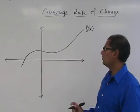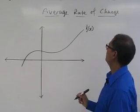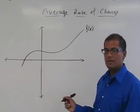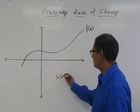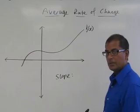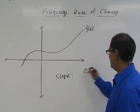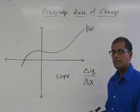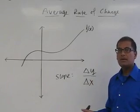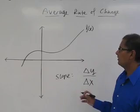So what we want to do is find the average rate of change of this function. What does that mean? Well, think of average rate of change as being the slope. And remember the slope, what is the slope? Well, it's the change in y over the change in x. That's going to be key to figuring out the average rate of change of this function.